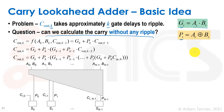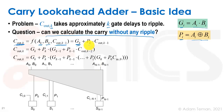Let's recall: the generate of stage i is ai·bi, and the propagate is ai XOR bi. The carry-out of stage k is a function of ak, bk, and the carry-out of stage k−1. We can write: c_out(k) = g(k) + p(k)·c_out(k−1). Either we get a generate from stage k, or a propagate that passes through the carry from the previous stage.